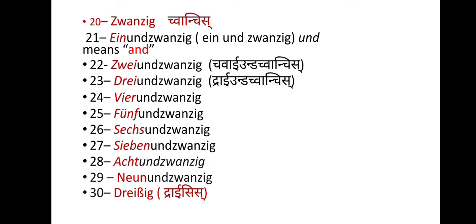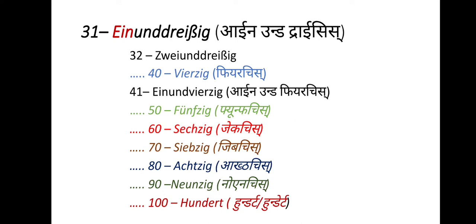So we have: 21 'einundzwanzig', 22 'zweiundzwanzig', 23 'dreiundzwanzig', and so on up to 29. Then 30 is 'dreißig'. So 31 is 'einunddreißig', 32 is 'zweiunddreißig', and we count in the same way from 21 to 29 pattern throughout.